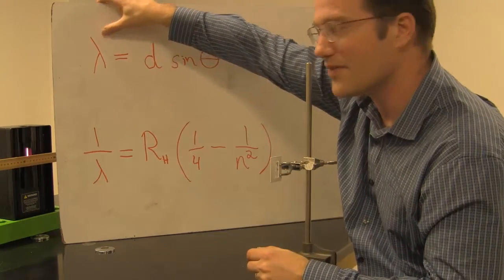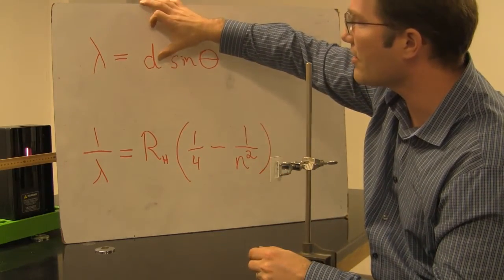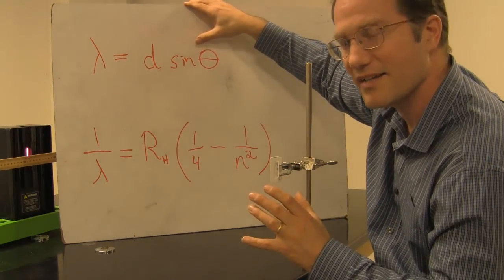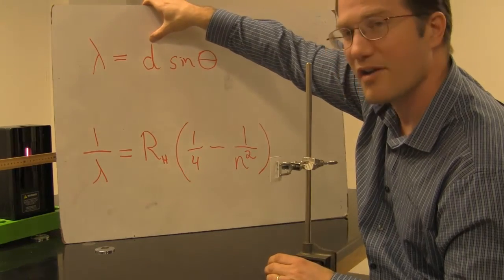And d is the distance between each one of them, or the average distance between each one. And for a fixed constant wavelength, you see that as d gets smaller, sine theta gets larger. So you get a greater dispersion of light for having a smaller value of d.